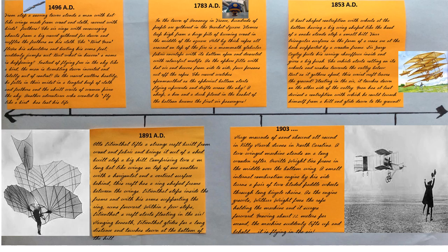1891 A.D. Otto Lilienthal lifts a strange craft built from wood and fabric and brings it out of a shed built atop a big hill, comprising two 6-meter-long bat-like wings on top of one another with a horizontal and vertical surface behind. This craft has a ring-shaped frame between the wings. Lilienthal steps inside the frame and, with his arms supporting the ring, runs forward. Within a few steps, Lilienthal's craft starts floating in the air. Hanging beneath it, Lilienthal glides for a long distance and touches down at the bottom of the hill.